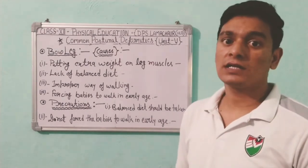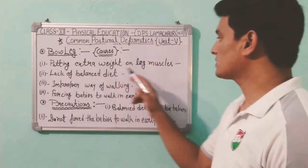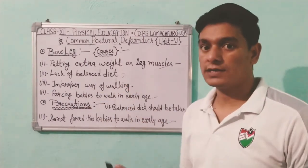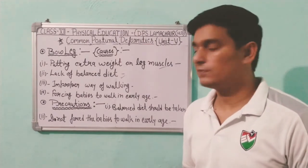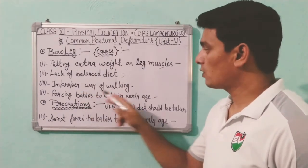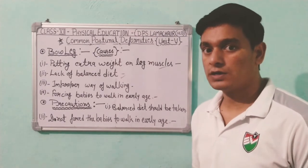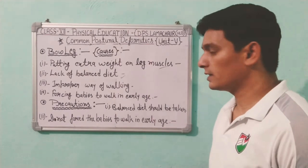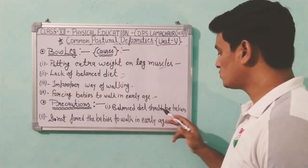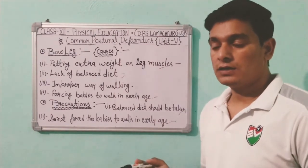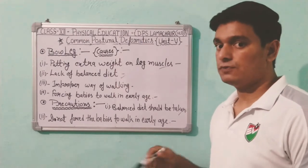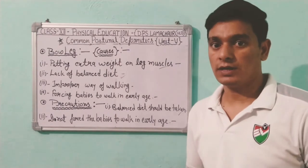The causes of bow leg include: putting extra weight on leg muscles, lack of a balanced diet with proper phosphorus and calcium necessary for bones, improper way of walking, and forcing babies to walk in early age. Precautions include: a balanced diet should be taken so that the body develops properly, and do not force babies to walk in early years as this can cause bow leg and other deformities.